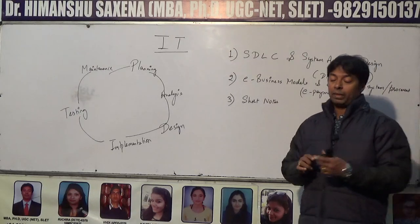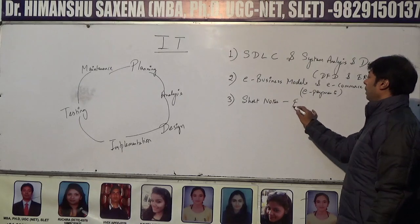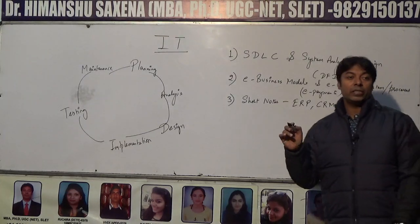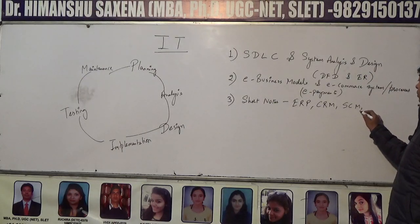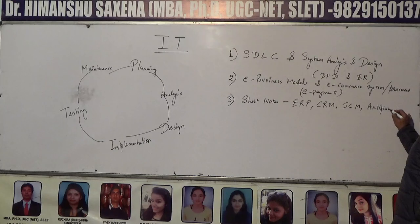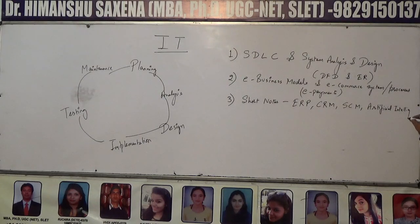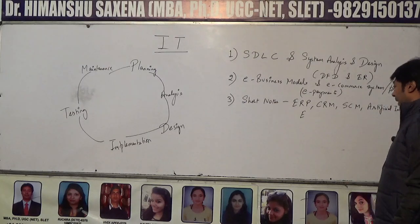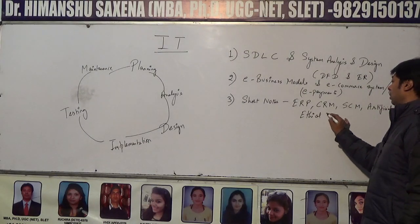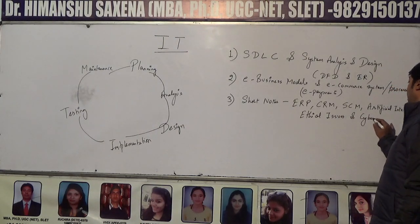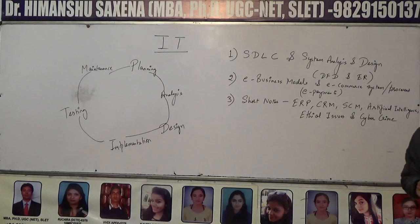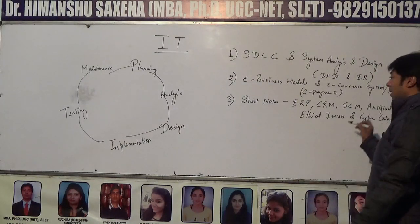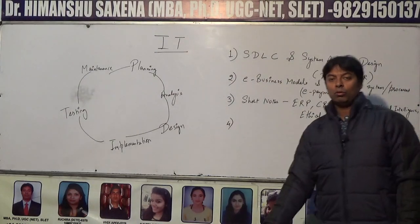After e-commerce, one can go through short notes so that ITN does not become monotonous. These include ERP (Enterprise Resource Planning), CRM (Customer Relationship Management), Supply Chain Management, Artificial Intelligence, business ethics or ethical issues, and cybercrime. These topics are important for short notes.